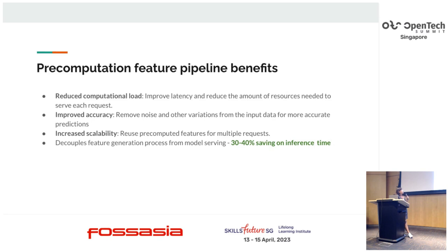Another benefit is increased scalability, since we are reusing features across models rather than generating them every time a prediction request is made. By moving feature generation out of the inference task, we are saving directly 30-40% of inference time, which means saving 30-40% of our GPU time and GPU cost.